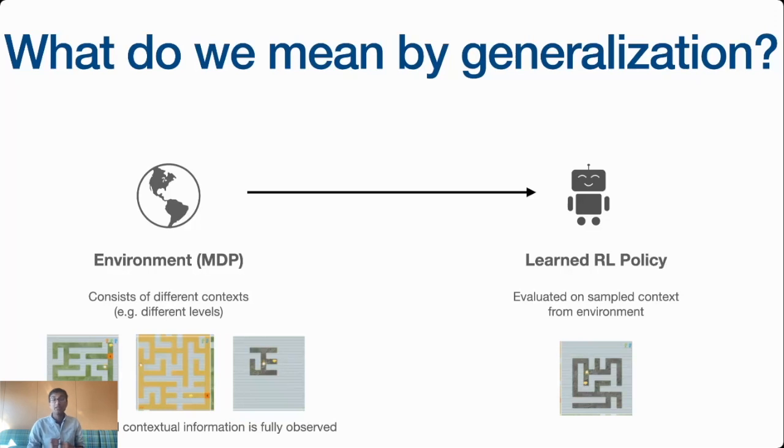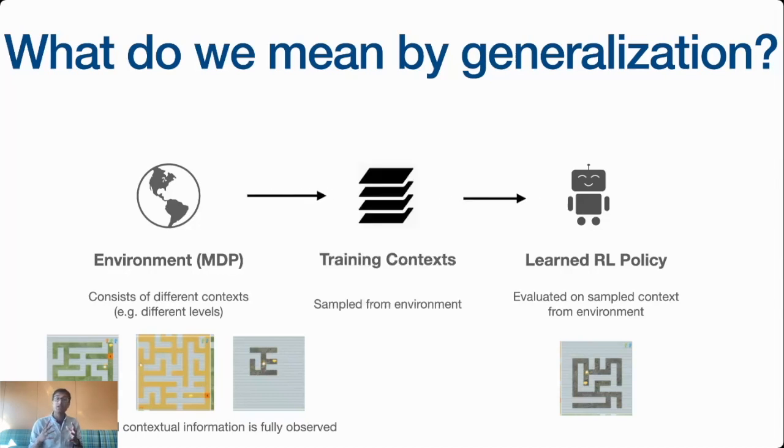In the generalization problem, we say that instead of being able to freely access the environment, we only get to access some number of training contexts that have been sampled a priori from the environment. One might think that we should be able to use the same RL algorithms just on the training context to maximize reward there. But, and this is one of the main messages of this talk, this kind of strategy is going to fail.